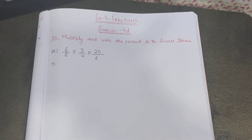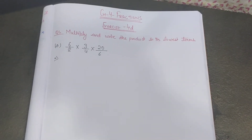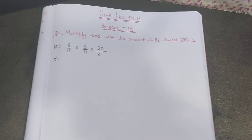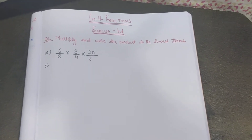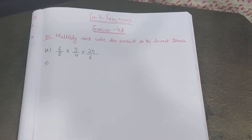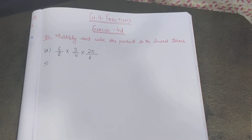Good morning students. Today we are going to start with Chapter 4 - Fractions, Exercise 4D, question number 1: multiply and write the product in its lowest terms.